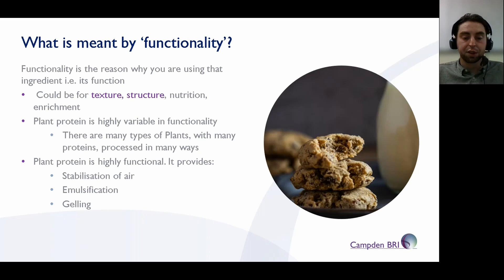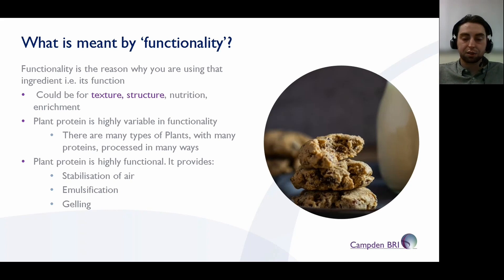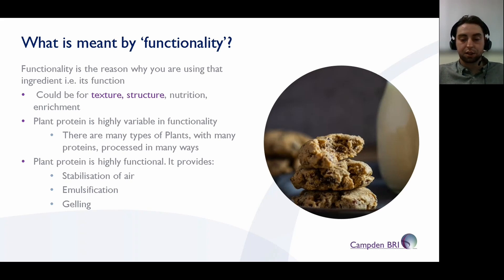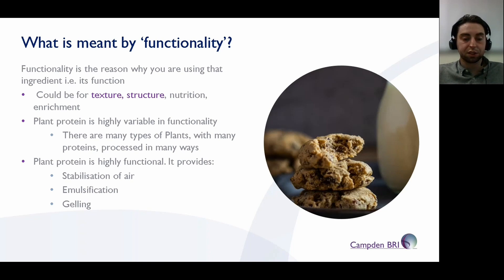Emulsions and emulsification — plant proteins can be used to make sauces, mayonnaises, etc. And gelling. Plant proteins are often used, or are being selected to be used, in meat analogues — things that are trying to replicate meat like burgers and sausages. Quite often they want the same sort of properties as meat. They want it to set and have a certain texture once it's cooked, and they want to bind all the ingredients that they mix together.